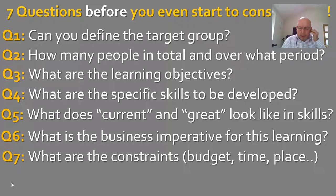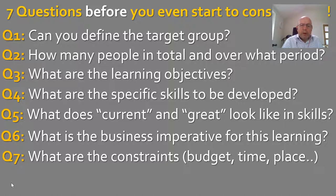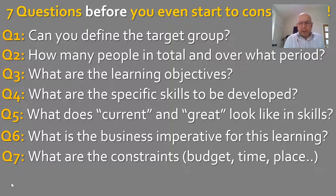The final question, before you look at any technologies, is: what are the constraints? In the real world we always have constraints — there may be a budget, or a time constraint. You'd like to get people together for four one-day sessions, but they may only be available for three three-hour sessions over the web. Once you've asked, discussed, and answered these seven questions well, you're in a much better position to go to the technology without having the technology drive your thinking.